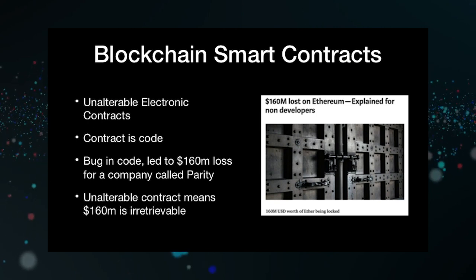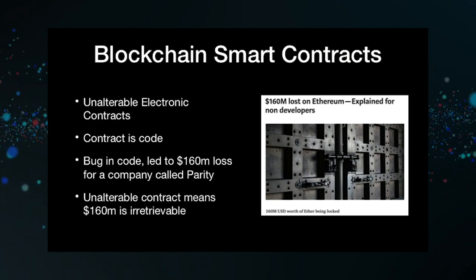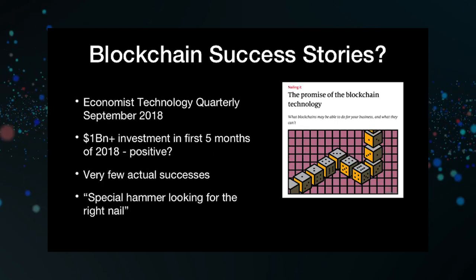Smart contracts are bits of code embedded inside a blockchain that get triggered under certain circumstances. A company called Parity had a smart contract bug and lost $160 million worth of Ethereum — and they can never get it back. It's irretrievable. They can't go to the law because it's an unregulated cryptocurrency. They can't ask anyone for the money back. It's gone. It's insane.